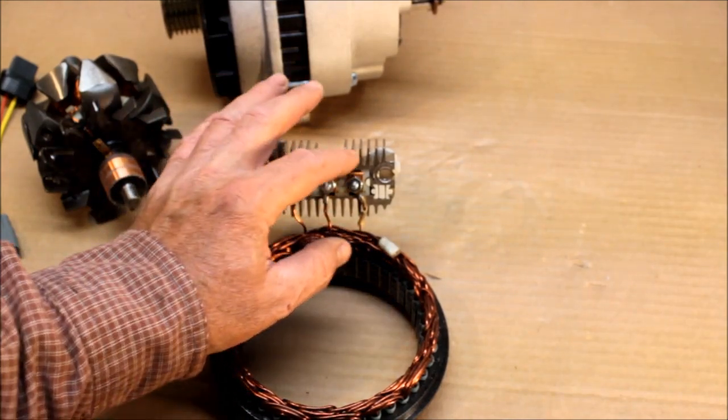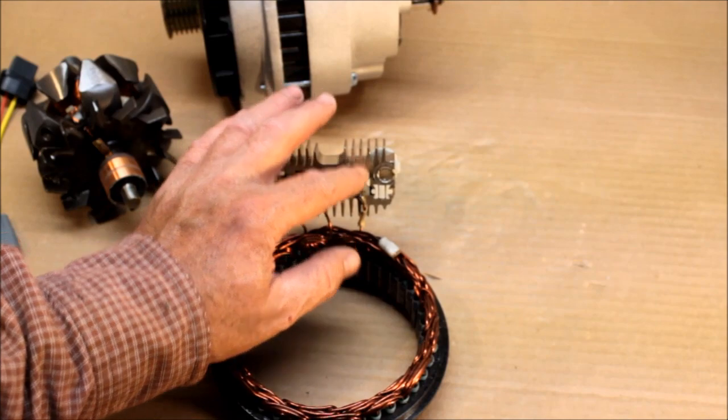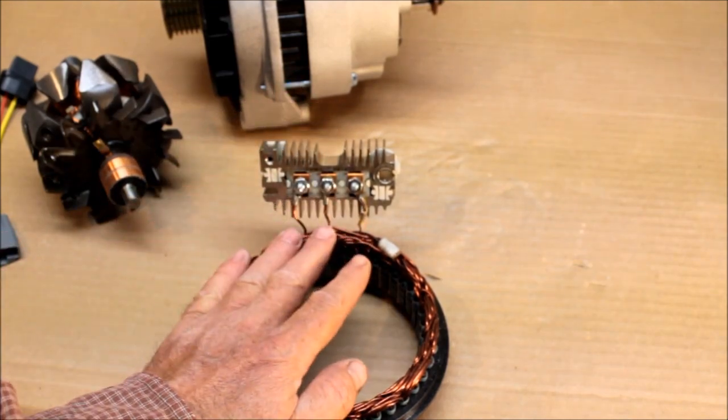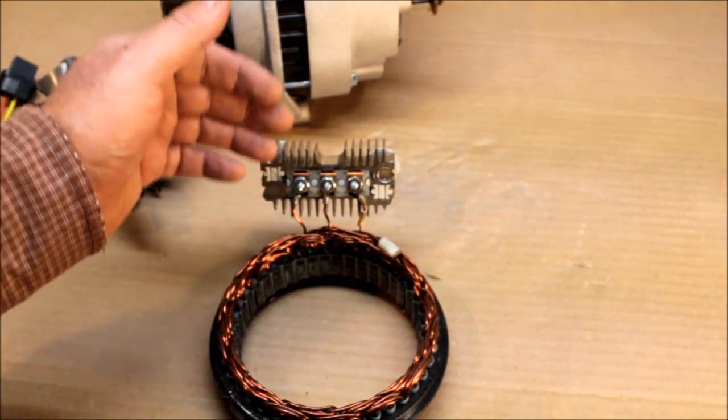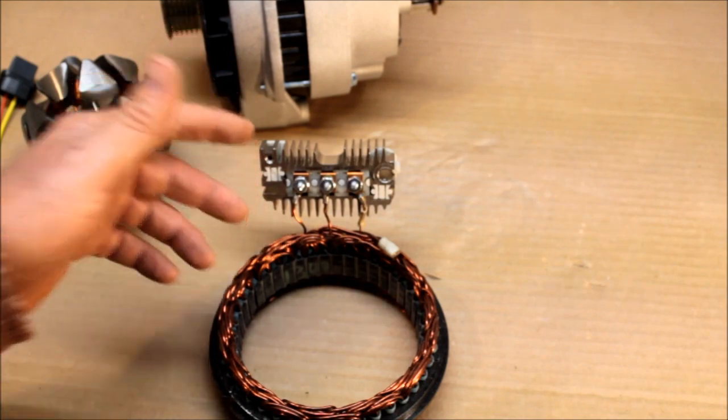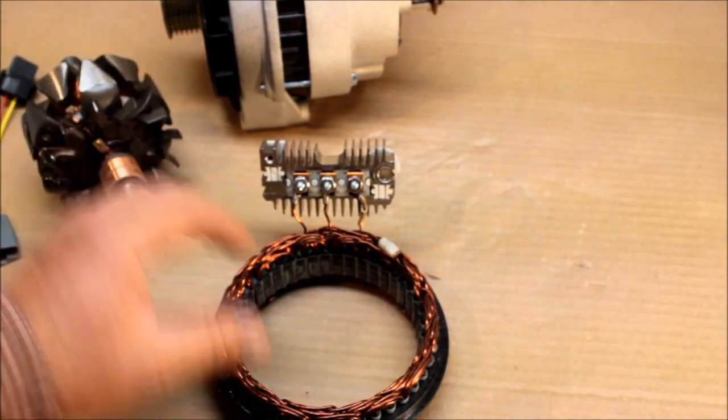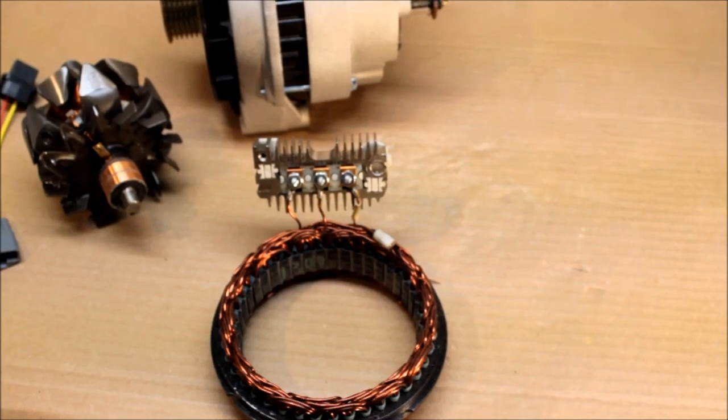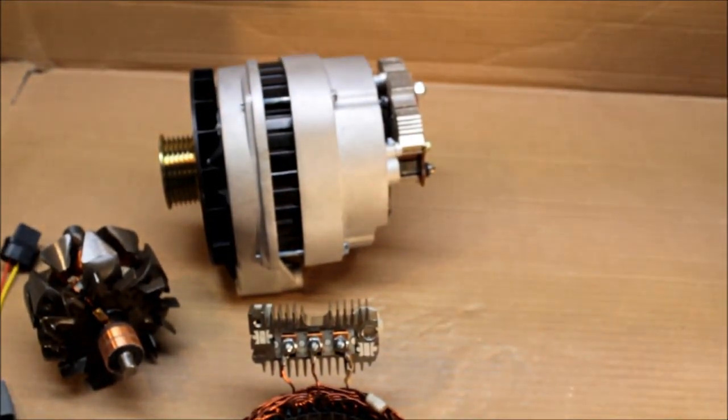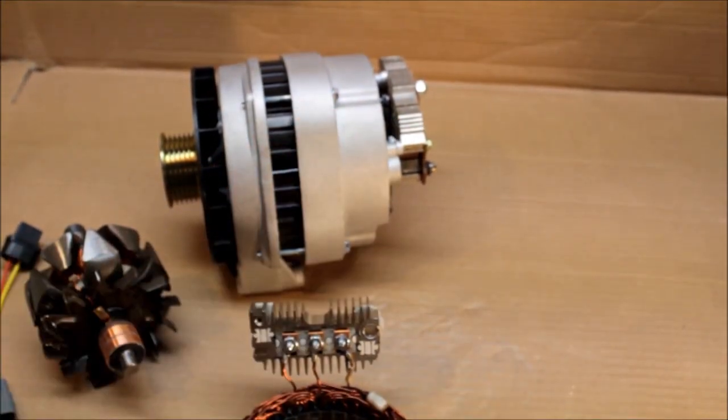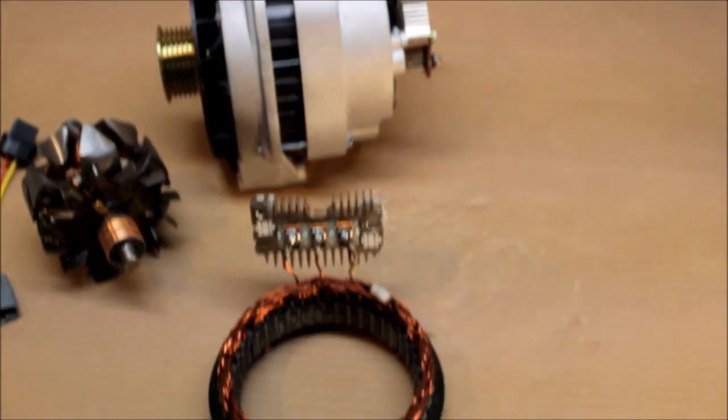By going to the dual rectifier that we have, we're basically doubling—we have two bridge rectifiers in that alternator running in parallel, compared to where this one just has one. The voltage regulator has nothing to do with this side of it.